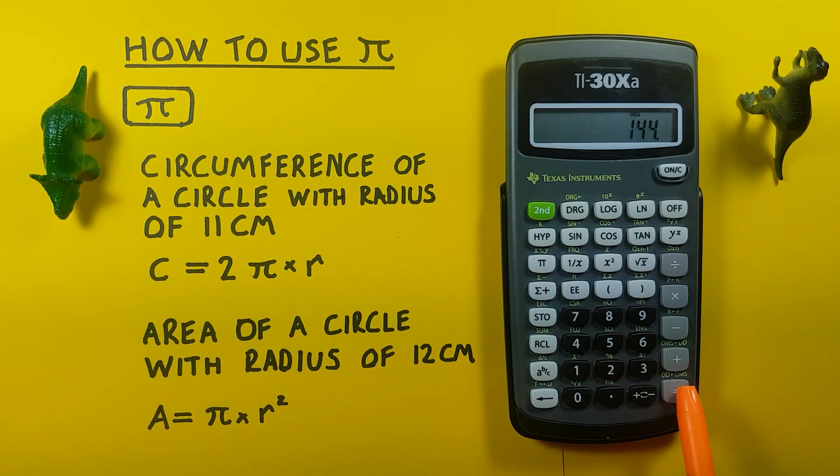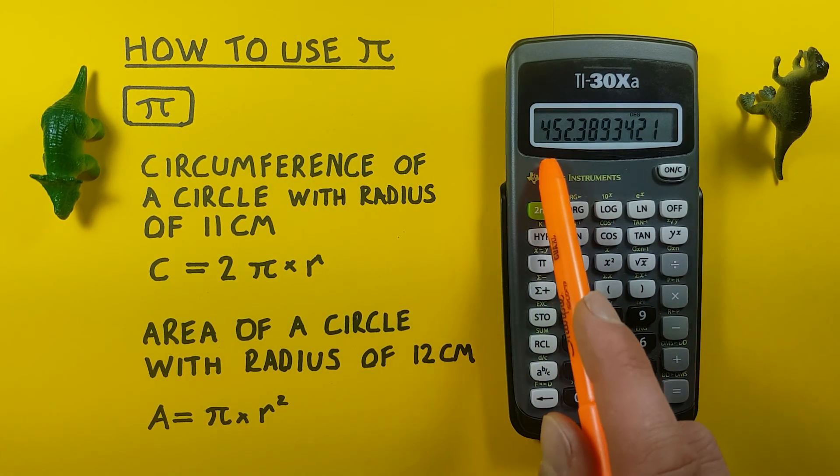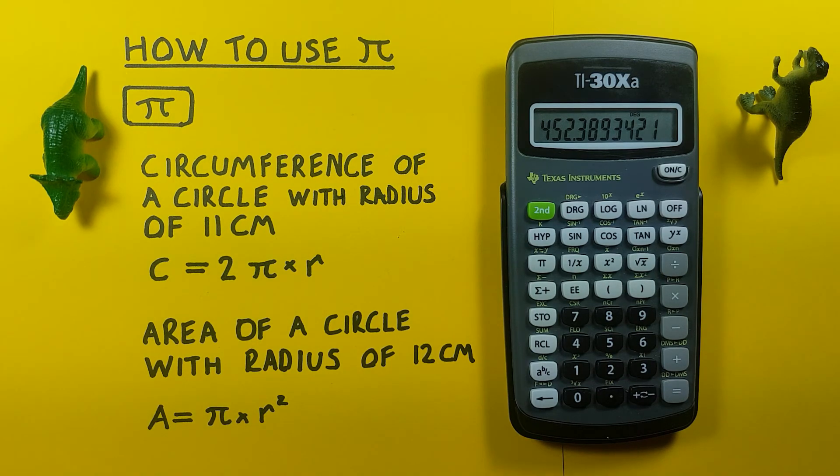There we go. Press equals, and we see we get an area of our circle of 452.389 and so on.